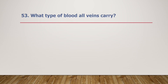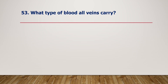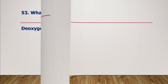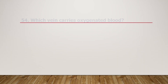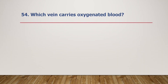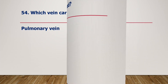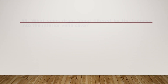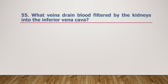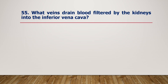What type of blood do all veins carry? Deoxygenated blood. Which vein carries oxygenated blood? The pulmonary vein carries oxygenated blood. What veins drain blood filtered by the kidneys into the inferior vena cava? Renal veins.